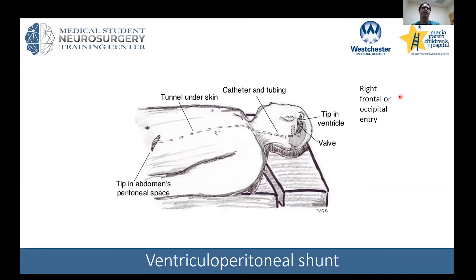For communicating hydrocephalus, VP shunt — or ventriculoperitoneal shunt — placement is indicated. This is the gold standard. A shunt involves an incision in the scalp, placement of a catheter into the ventricle, connection to a valve that can sometimes be regulated to control how much CSF is drained, and then the tubing is tunneled under the skin. Most commonly it goes into the peritoneal space, where the abdominal walls absorb the fluid.